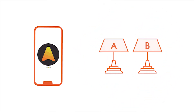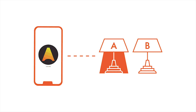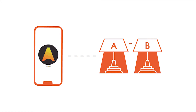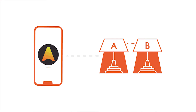Switch power off from both units, then power unit A and wait until the Kasambi app connects to it, then power unit B. You've now ensured that your mobile device is communicating directly with unit A only, and then unit A is communicating to unit B.